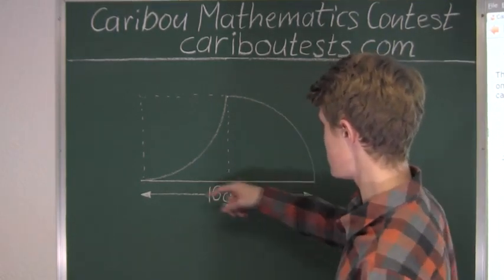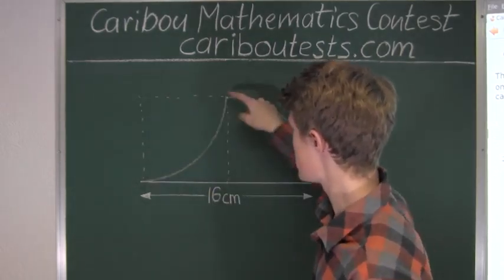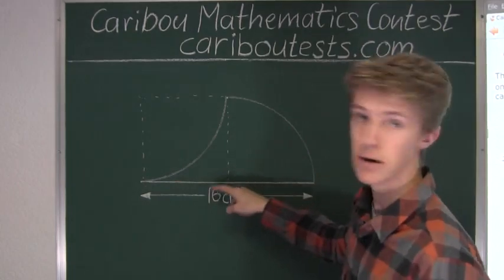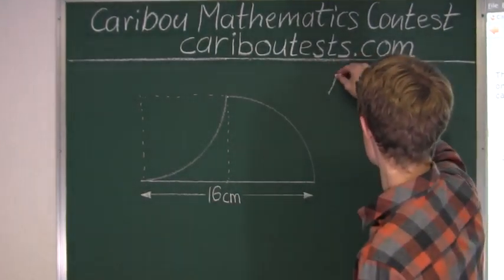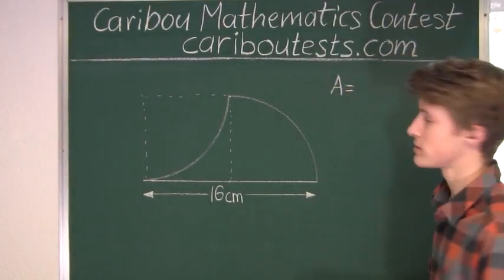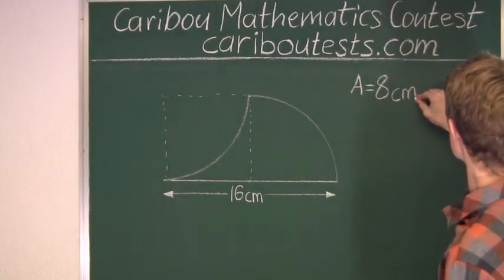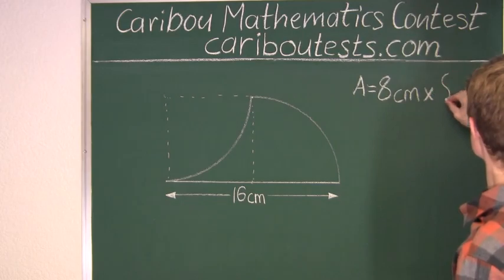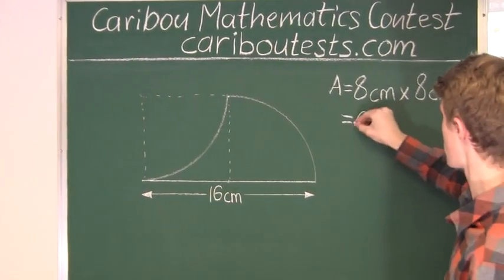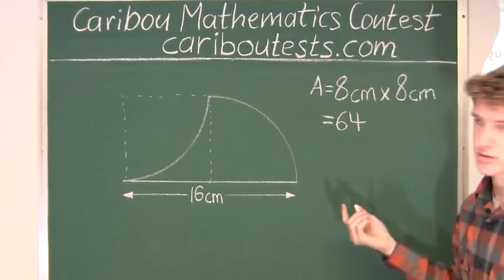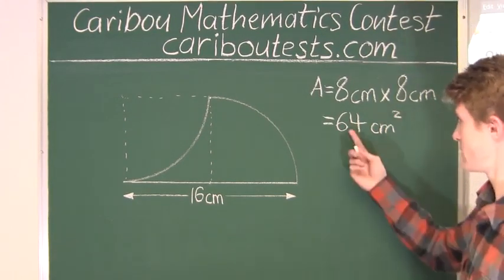Now, to make this easier, we will put this quarter circle into here so that this will be a square, because we will have 8 cm by 8 cm. So therefore, the area of this shape is equal to 8 cm times 8 cm, which equals 64. Centimeters times centimeters is centimeters squared. So the answer is 64 cm².